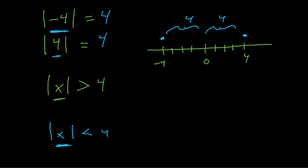Now taking it up a notch into inequalities: if we have the absolute value of x is greater than four, we're saying the distance from zero is more than four units away. So if you're at zero and greater than — not equal to four, but greater than four — you're further away from zero, more than four units to the right or to the left of zero, which would be to the left of negative four.